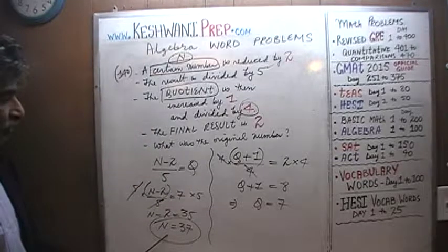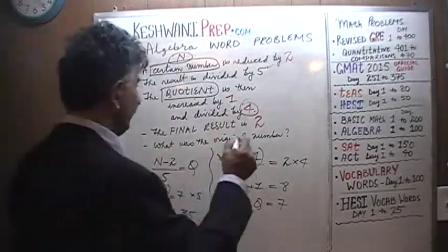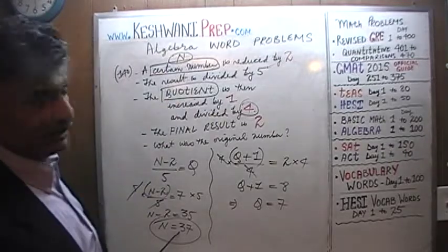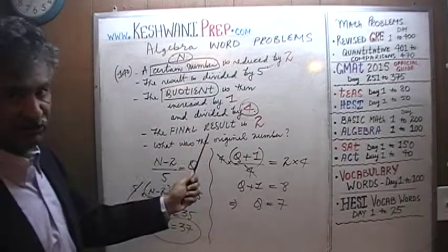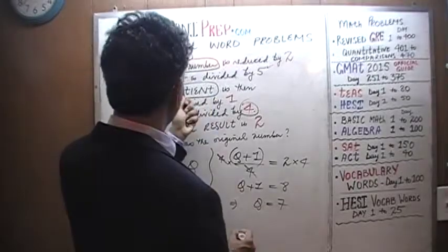What we need to do now, very quickly, is to verify our work. How can we verify it? Let's verify our work up here. So what we are claiming is that N is 37. And if it is indeed 37, by the time we do all of these processes, we should end up with 2. Let's find out. N is 37.